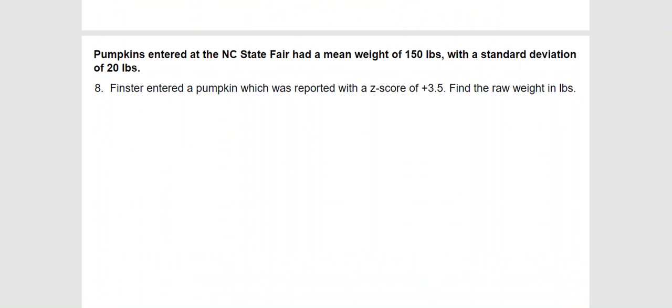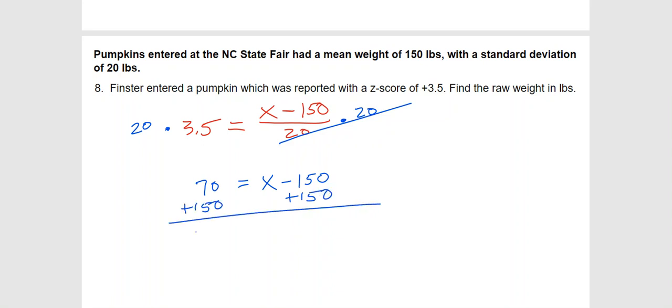All right, this time they give you the Z-score and they ask you for the raw score. And so, we don't know the raw score. We know the mean is 150. We know the standard deviation is 20. And when we go back and we multiply both sides by 20, which these guys cancel out, I'm left with that on the right. 20 times that gives me 70. And, yeah, when I add 150 to get X by itself, I wind up with 220 pounds. That's a big heifer. It weighs more than some of y'all do.